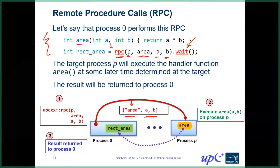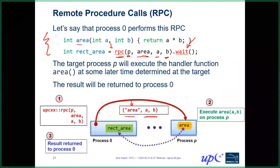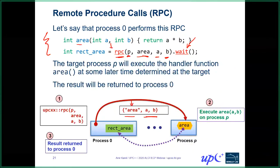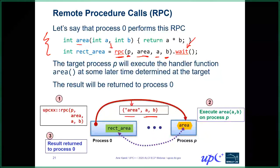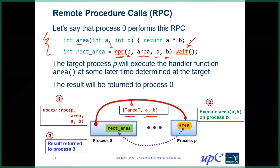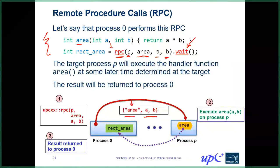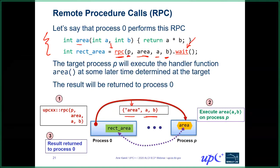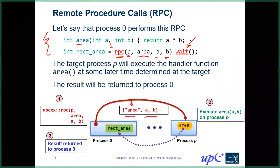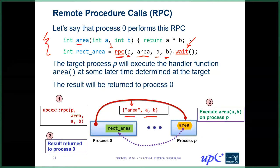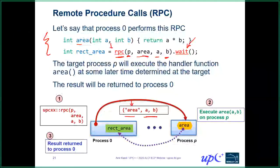On whether A and B should be global pointers: you could do that, but what we're doing here is directly transferring the integer arguments. On address-based layout randomization: we do some tricks underneath the hood to deal with that, including a translation to account for ASLR. A and B are passed by value to the RPC function, so just like any other pass-by-value in C++, the value gets read and it doesn't matter what happens to those variables afterwards.